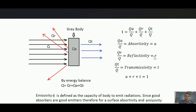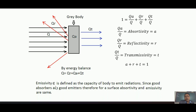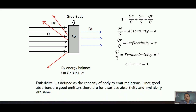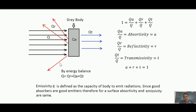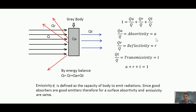A denotes the absorption capacity of the body, R denotes the reflection capacity, and T denotes the capacity for radiation to pass through. One more parameter in radiation heat transfer is emissivity, defined as the capacity of a body to emit radiation — denoted by epsilon. By Kirchhoff's law, good absorbers are good emitters: the more radiation a body absorbs, the more it emits. So numerically, epsilon and A are the same.